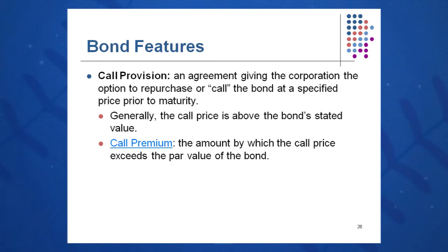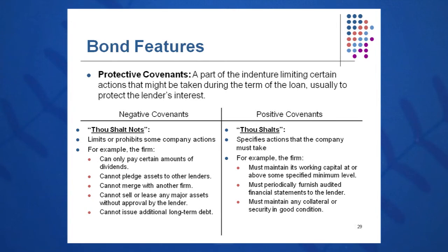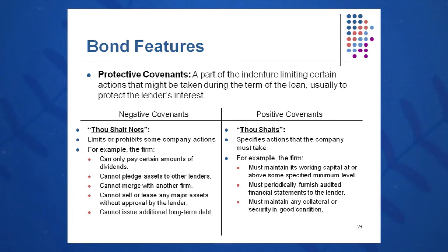Typically you'll get a bond premium when a bond is called — you may get the $1,000 back plus all or part of a portion of the coupon, and that should all be called out in the indenture. You also get some protective covenants listed in the indenture — a list of thou shalts and thou shalt nots. Thou shalt only pay certain amounts of dividends, thou shalt not take on any more debt, thou shalt not merge with another firm. You may also get positive covenants saying thou shalt keep your financial statements in good order and show them to us on a regular basis, and keep your collateral in good condition.